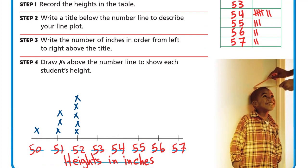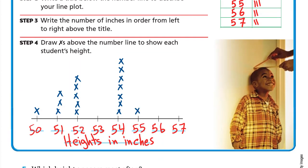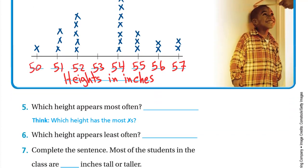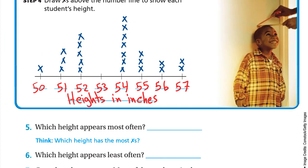For 54, seven students, so one, two, three, four, five, six, seven X's. Then 55 is three, 56 is two, and 57 is two. Let's answer these questions. Which height appears most often? It's clear that 54 has the most number of X's, so it's 54 inches.